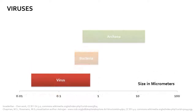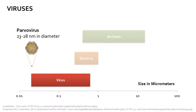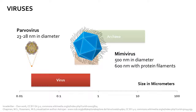The smallest known viruses are parvoviruses with an average diameter of 23 to 28 nanometers. The largest known viruses are mimiviruses with an outer diameter of 600 nanometers if filamentous protein projections are taken into account.